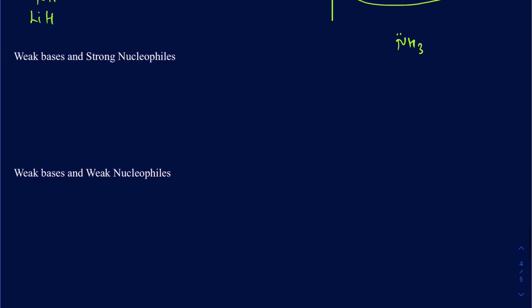Now let's talk about weak bases and strong nucleophiles. The conjugate bases of strong acids — like Cl⁻, Br⁻, and I⁻ — are going to be strong nucleophiles because they have a negative charge. Other examples include F⁻ and CN⁻. They're not super weak bases, but when comparing acting as a base versus a nucleophile, they would rather act as a nucleophile. SH⁻ is also going to be a weak base and a strong nucleophile.